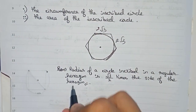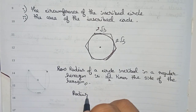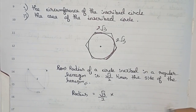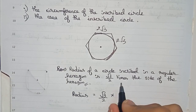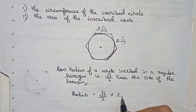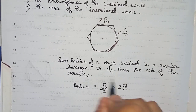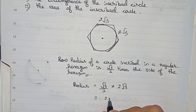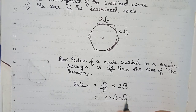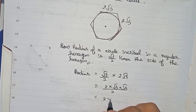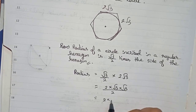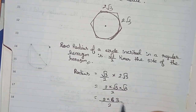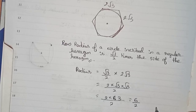With this formula you can easily find the radius. So radius equals root 3 by 2 multiplied by the side, that is 2 root 3. So radius equals root 3 by 2 multiplied by 2 root 3. Root 3 into root 3 is 3, so 2 times 3 is 6, divided by 2, that gives us 3. So the radius is 3 centimeters.